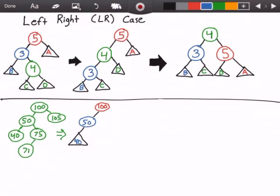And don't get confused with the triangle. The triangles basically mean a subtree, and a subtree is zero or more nodes. So it could be null, it could be one node, or it could be multiple nodes.